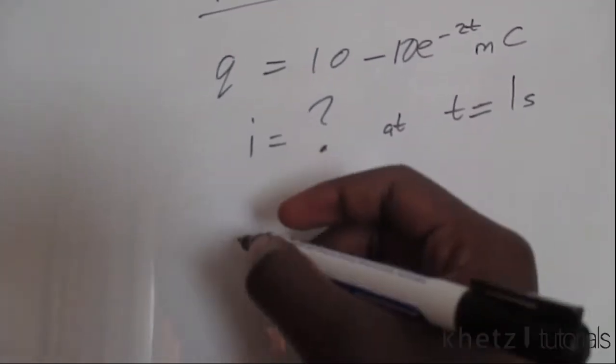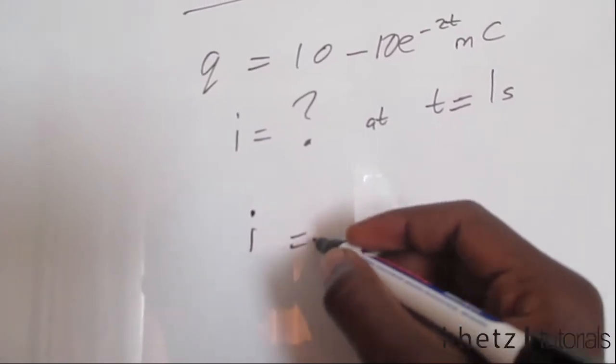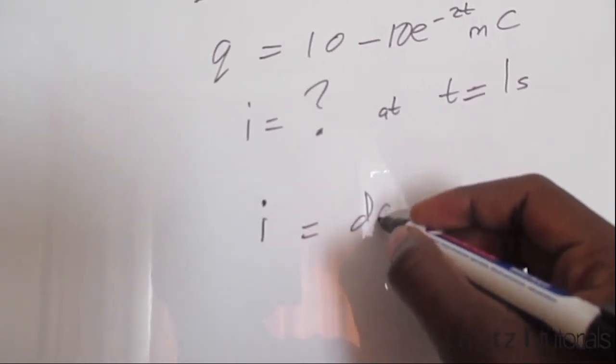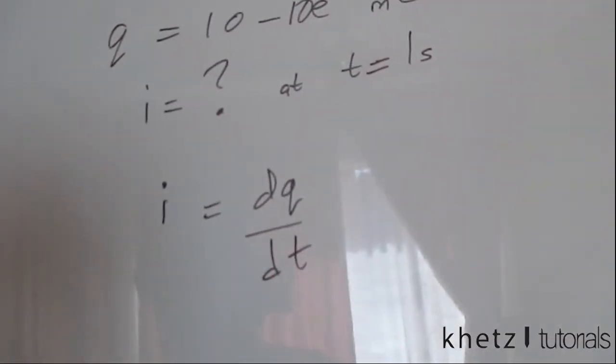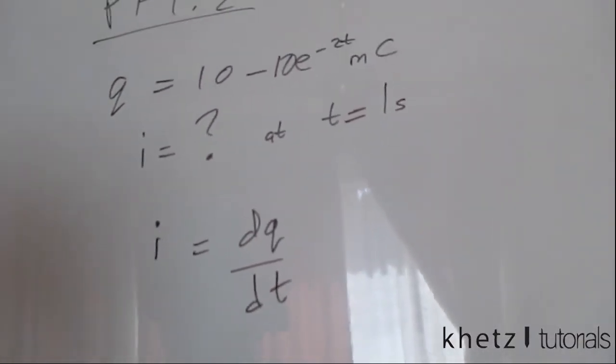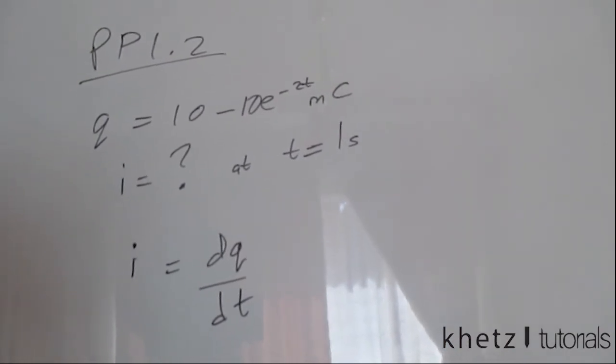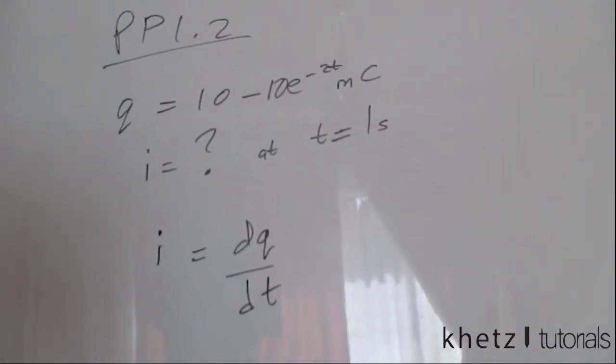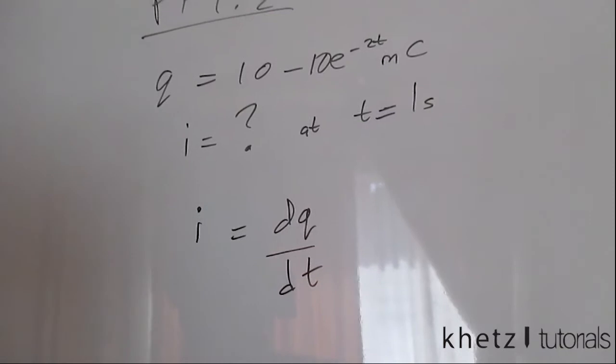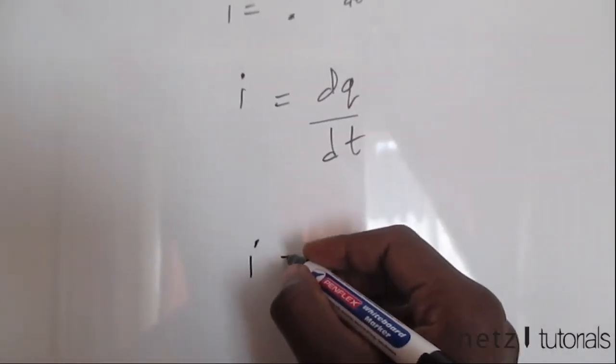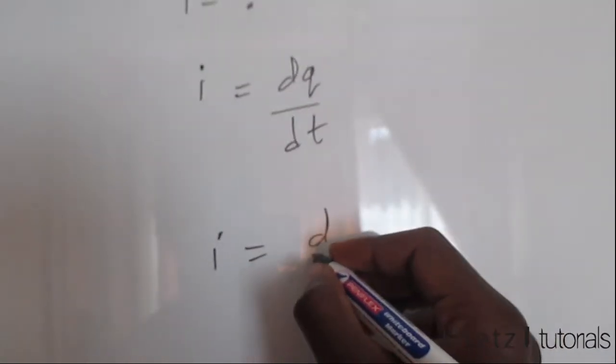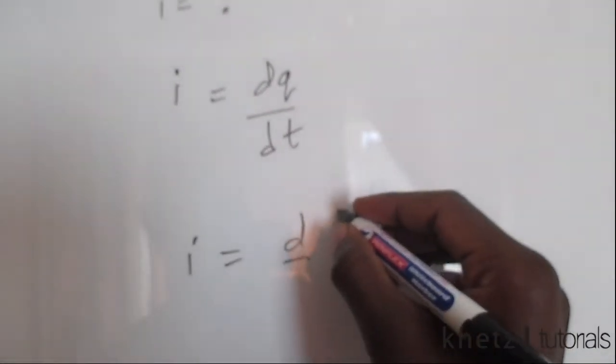Knowing that the current equals the rate of change of charge, which is written as the derivative of the charge, we can use this formula to find our current at time t equals one second. Using this same formula, we substitute i equals the derivative of the given formula at time t equals one.